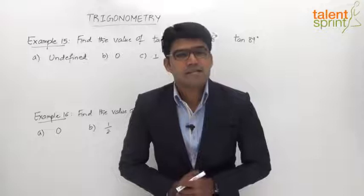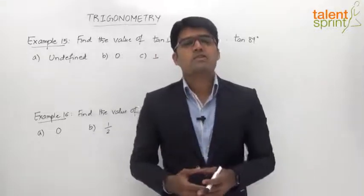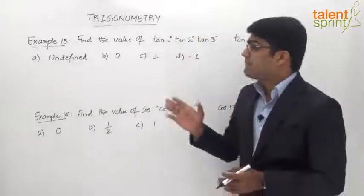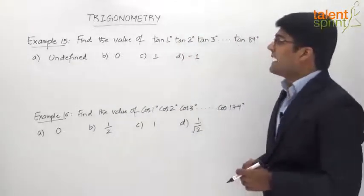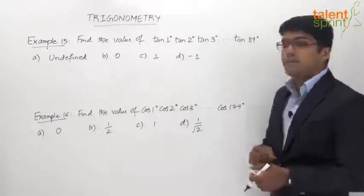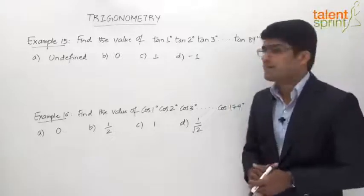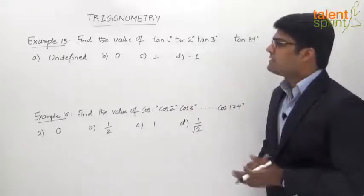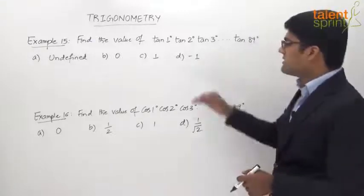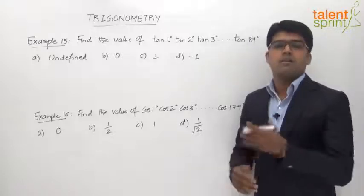Let us now take our next set of examples, which are based on the product of a series of trigonometric ratios. Example 15 says: find the value of tan 1° × tan 2° × tan 3° and so on up to tan 89°. The given answer options are: undefined, 0, 1, and -1. We are required to simplify this series product of the trigonometric function tan.